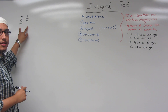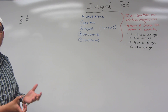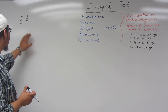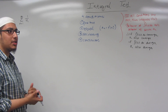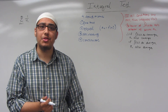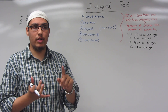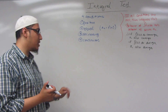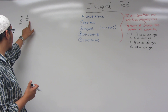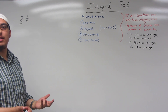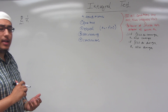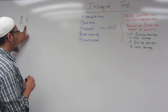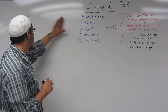Have we seen this series anywhere? This is a special case of the p-series called the harmonic series. We know from the definition that the harmonic series is always divergent. We can also prove this using the p-series test because p is equal to 1 in this case. Let's use these four conditions on this series.